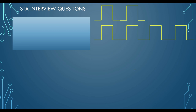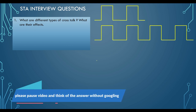Let us get started with the questions. You can see that there are two waveforms shown here, just for reference. The first question is: what are the different types of crosstalk and what are their effects? You can pause the video to think of the answer and then resume.